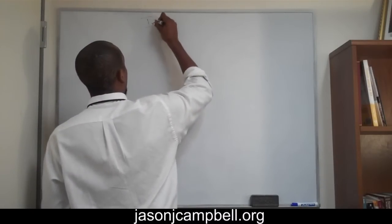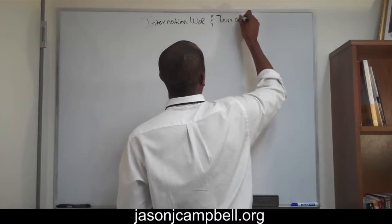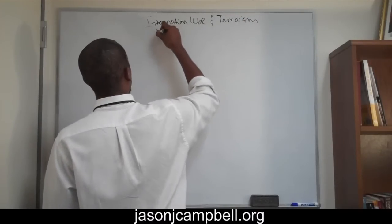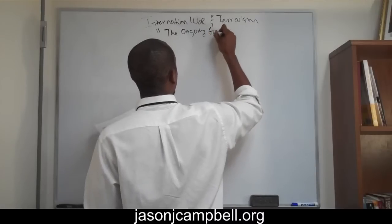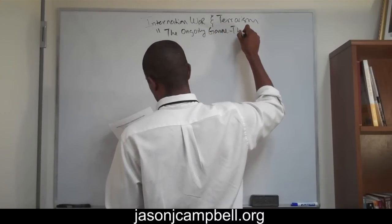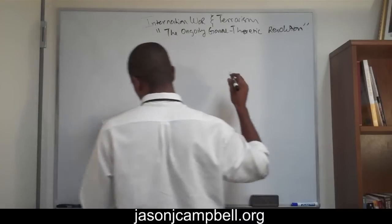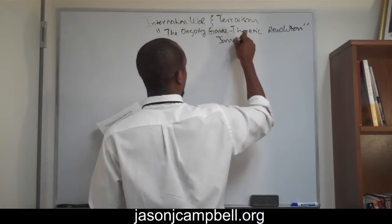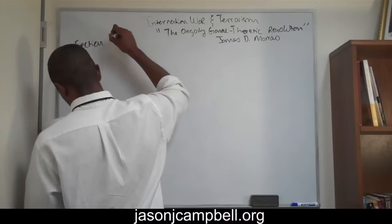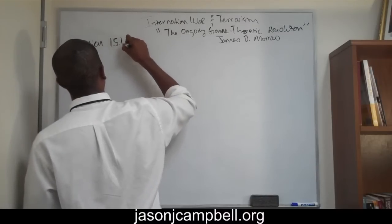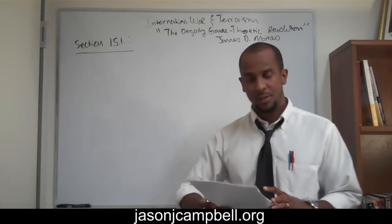This is International War and Terrorism, and this is the Ongoing Game Theoretic Revolution, by James D. Morrow. Section 1.5.1. First thing — game theory, according to Morrow: